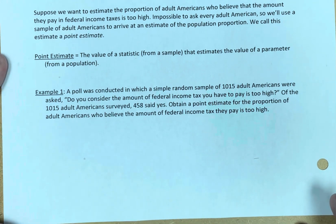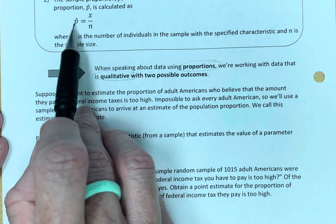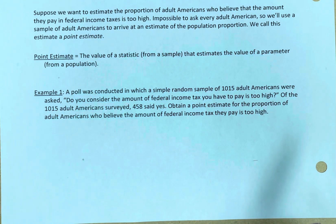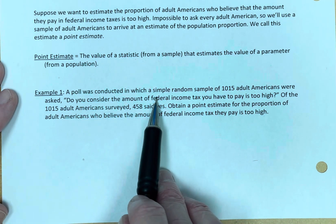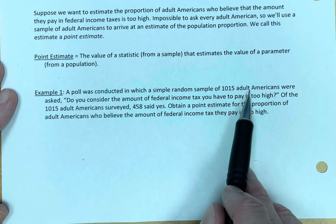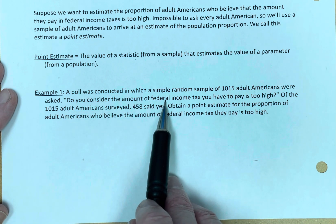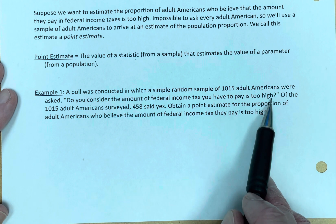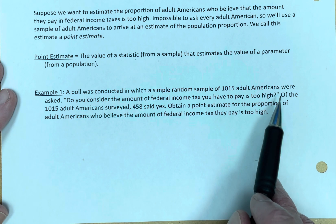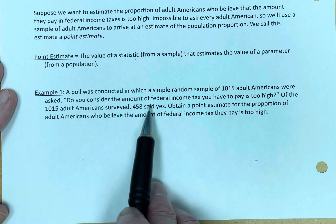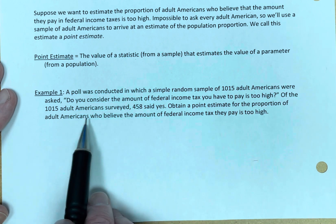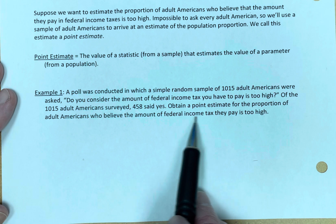Let's do an example using this formula. A poll was conducted in which a simple random sample of 1,015 adult Americans were asked: 'Do you consider the amount of federal income tax you have to pay is too high?' Their answers are yes or no — not a numerical answer. Of the 1,015 adult Americans surveyed, 458 said yes. Obtain a point estimate for the proportion of adult Americans who believe the amount of federal income tax they pay is too high.